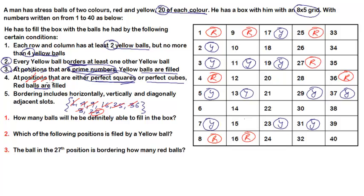Now condition 5 says that bordering includes horizontal, vertical, and diagonal adjacent slots. So condition 5 actually explains what 'border' means for condition 2. For example, slot number 20 is bordered by 12 and 28 horizontally, 19 and 21 vertically, and 11, 29, 13, and 27 diagonally.